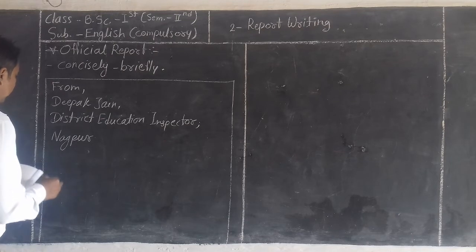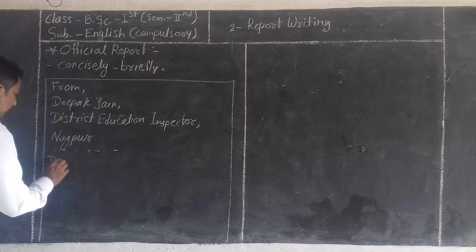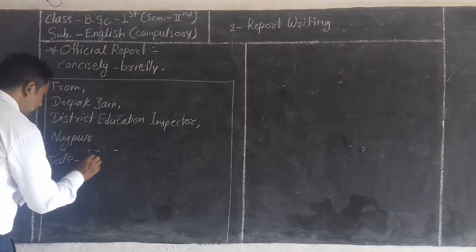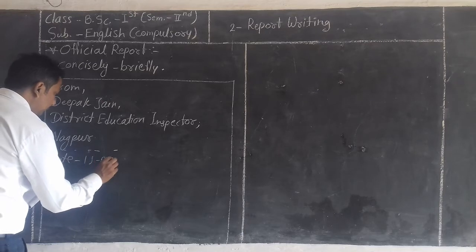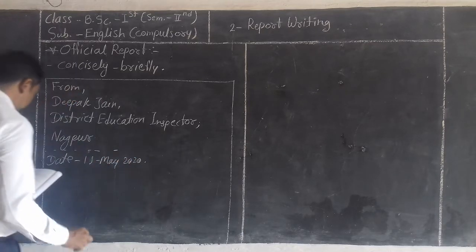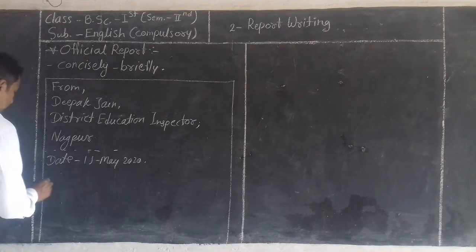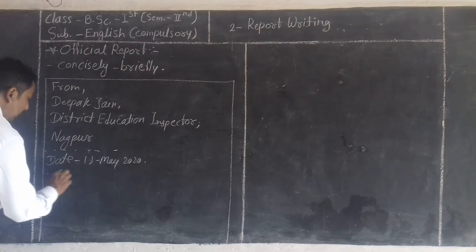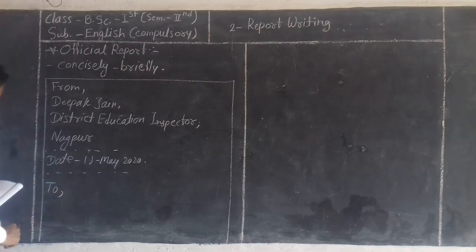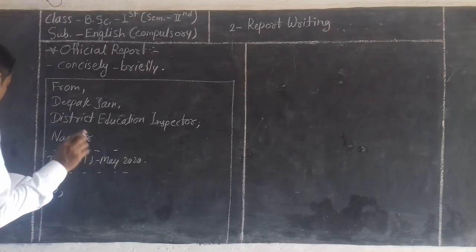After that, we have to write the date — leaving one line — for example, 15 May 2020. After that, we have to write to whom we are sending this report. Leave one line, write TO, followed by a comma, then write the name and designation of the person to whom the report is sent.